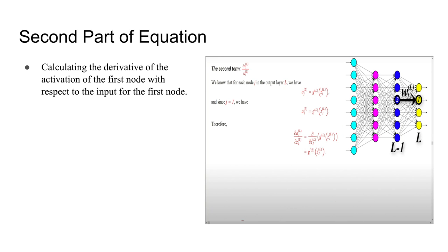For the second part of the equation, you're trying to calculate the derivative of the activation of the first node with respect to the input for the second node. We know that the first equation is essentially true, and since we are working with node 1, we can substitute j for 1. Then substituting into the equation, we can simplify to g' of the layer times z sub 1 of the output layer. Again, this term is useful as we will substitute it into the final equation.